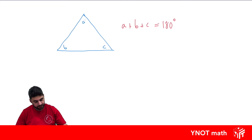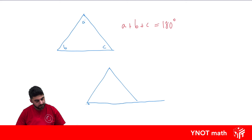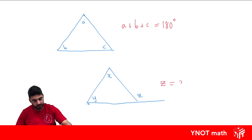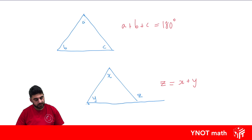Let's also look at another property. If we have a triangle where one of the sides is extended, the exterior angle — let's call it z — equals the sum of the opposite two interior angles. So z equals x plus y. We call this: the sum of the two interior opposite angles equals the exterior angle.